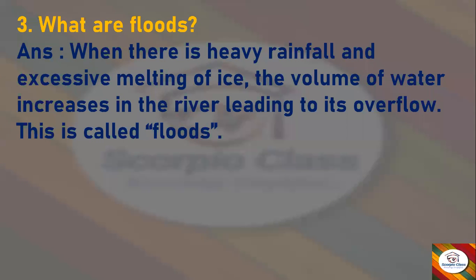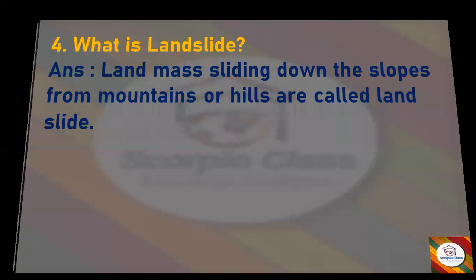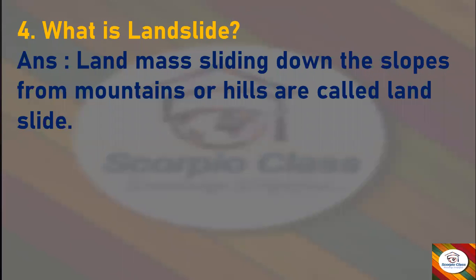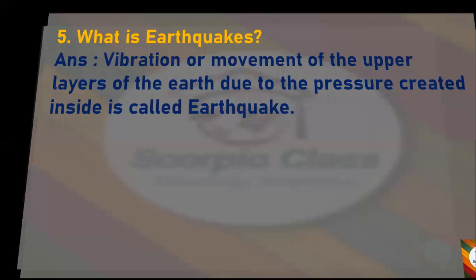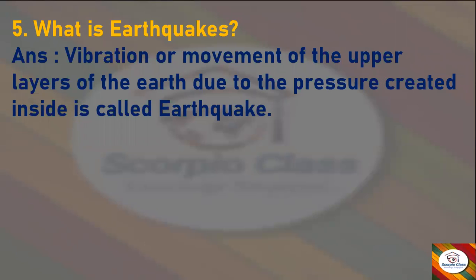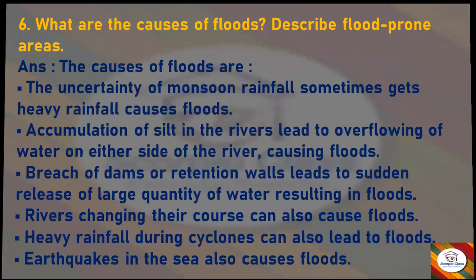What are floods? Answer: When there is heavy rainfall and excessive melting of ice, the volume of water increases in the river, leading to its overflow — this is called floods. What is a landslide? Answer: Landmass sliding down the slopes from mountains or hills is called a landslide. What is an earthquake? Answer: Vibration or movement of the upper layers of the earth due to pressure created inside is called an earthquake.